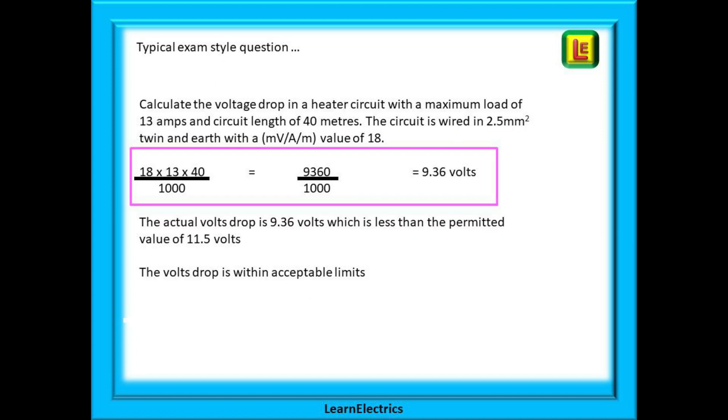Here is a typical exam style question. Calculate the voltage drop in a heater circuit with a maximum load of 13 amps and a circuit length of 40 meters. The circuit is wired in 2.5 millimeter twin and earth with a MVAM value of 18. All the information we need will be in the question. Again use simple steps to find the answer. If we do our calculation correctly we should have an answer of 9.36 volts. At full load this circuit will lose 9.36 volts into the cable.